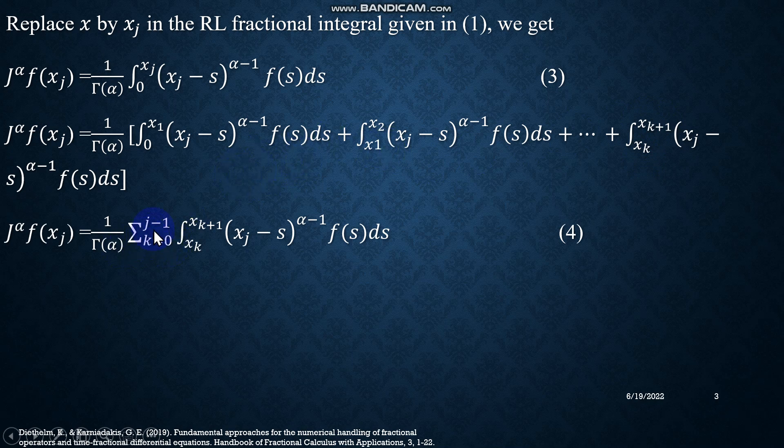So if I add all of these integrals, we can use this summation notation and hence we have equation number 4. So in this equation 4, if you put k equal to 0 in the lower limit, then you will have x₀ as the lower limit of integration, and if you put j-1 in the upper limit, you will have xⱼ. So in equation 4, we can easily and safely use this summation notation.